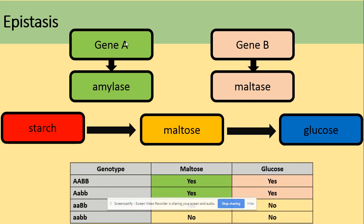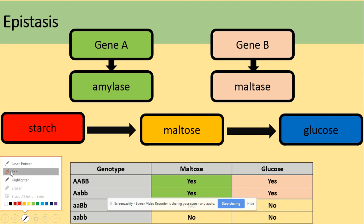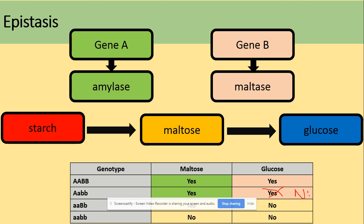Let's summarize with a few genotypes. If we've got dominant homozygous for both gene A and gene B, both amylase and maltase are produced, so we get maltose and glucose. Now let's spot a mistake in the next genotype: we've got at least one dominant A, so yes we get maltose. But is the glucose correct? No — you're not going to get glucose because you've got recessive alleles for gene B, so there is no glucose.